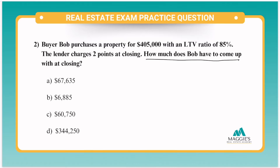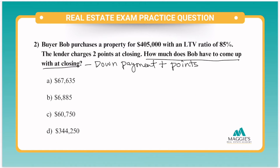In this question, it is asking how much does the buyer have to come up with at closing? So what they want to know is how much for down payment and how much in points? Just like the last question, we're going to have to find the loan amount. Here we see that they purchased the property for $405,000 with a loan-to-value ratio of 85%. So let's multiply that: $405,000 times 0.85 is going to give us a loan amount of $344,250.